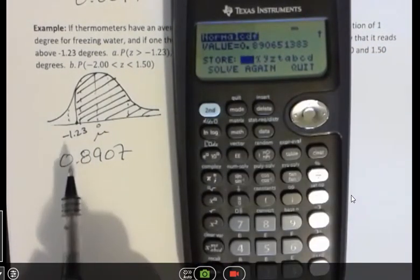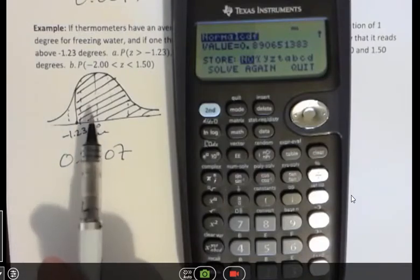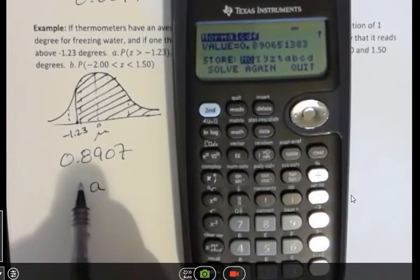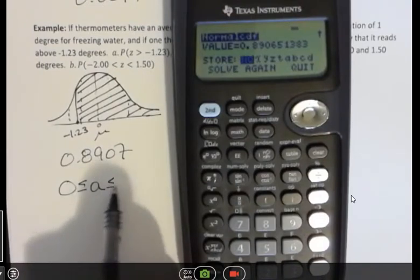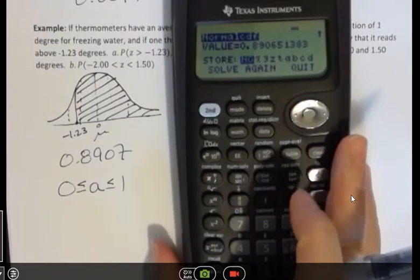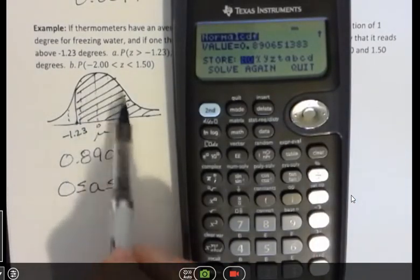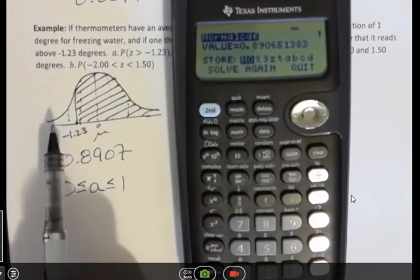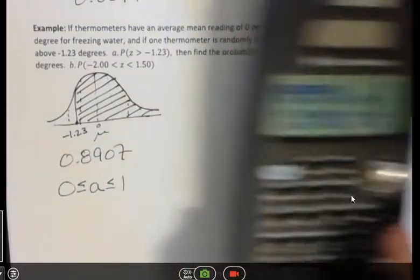And remember, whenever you're using normal CDF, that the value that you're going to get for an answer is going to be the area which is going to be between 0 and 1, inclusive, right? There's no way to get anything more than that because this represents a probability of 100% or 1, if you think about it as an area.